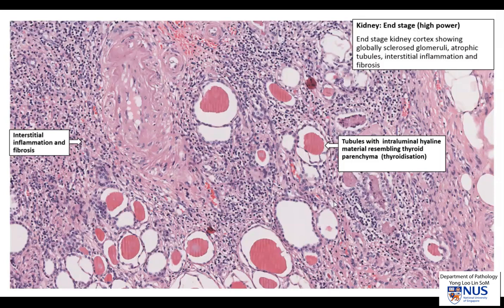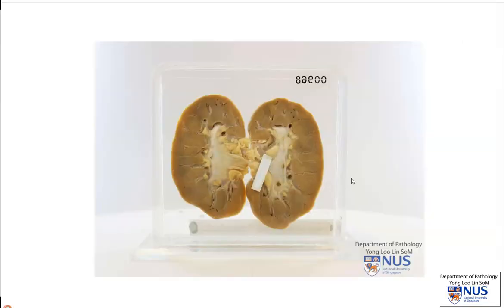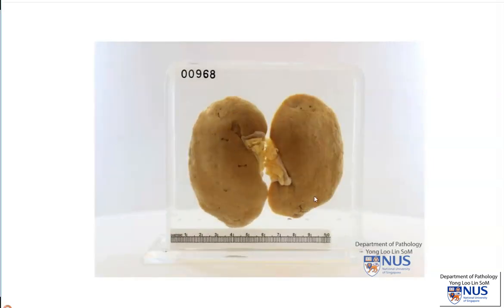There is also interstitial fibrosis and sometimes inflammation as well. In summary, this is an example of a case of end-stage kidney. Many different conditions can contribute to this. What we see grossly is a shrunken small kidney with a thin cortex and blurred corticomedullary junction. There may also be irregularity and scarring on the renal capsular surface.